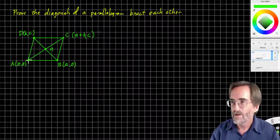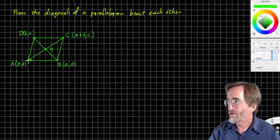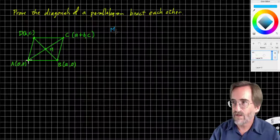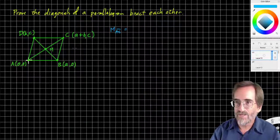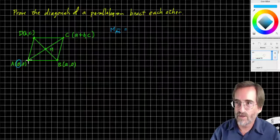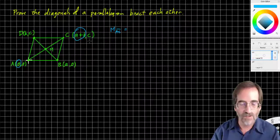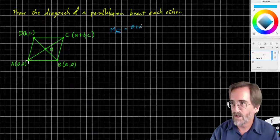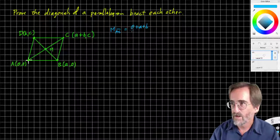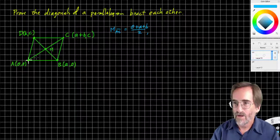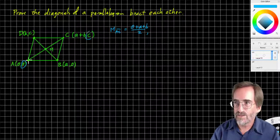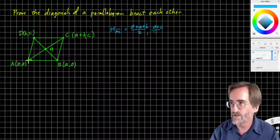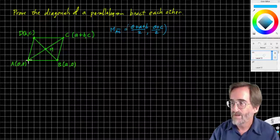The midpoint formula is the average of the x's and the average of the y's. Or x1 plus x2 divided by two and y1 plus y2 divided by two. And we're going to see if they have a common midpoint. So here we go. Common midpoint. Let's see if they do. So the midpoint of AC is the x's added together. Zero plus a plus b. Those are the x's added together. Zero plus a plus b divided by two.